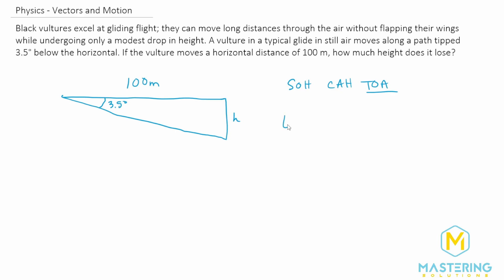So what TOA means is tangent of theta, or the angle, is equal to the opposite over the adjacent. Now we have theta as we talked about, and we have the adjacent, but we need to solve for the opposite. So let's isolate that by multiplying both sides of the equation by the adjacent. So we have opposite is equal to the adjacent times the tangent of theta.